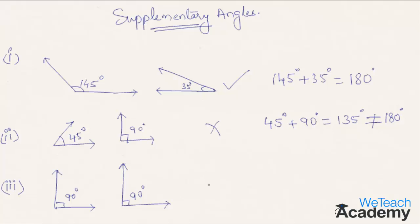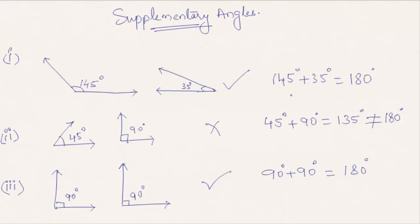For the third pair of angles: yes, these are supplementary angles, since the sum of these angles is 90 plus 90, which equals 180 degrees. That was a basic introduction to supplementary angles — hope you liked the presentation.